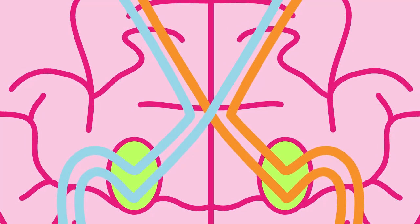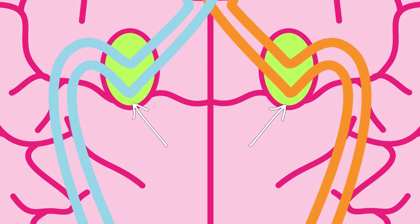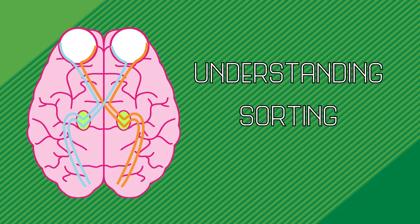These axons go all the way back to this structure called the lateral geniculate nucleus, which acts as a relay center for visual information. Here, your brain is able to start understanding and sorting the visual data it's receiving, and passing the information on to the primary visual cortex, or V1, as the people in the biz call it.